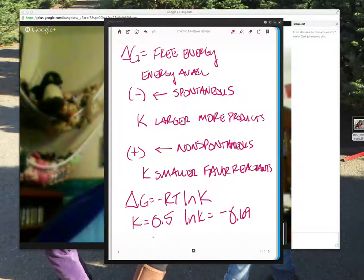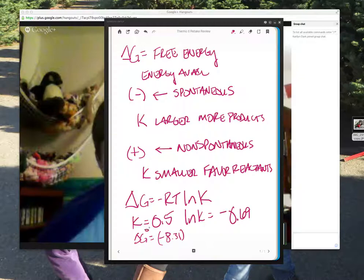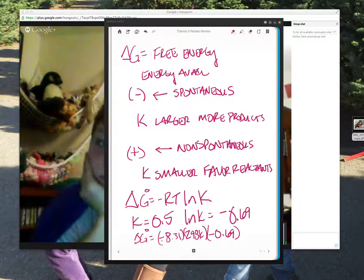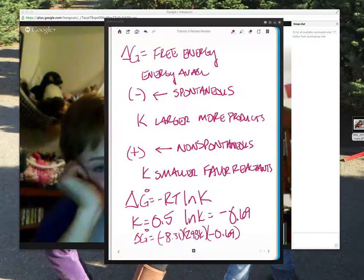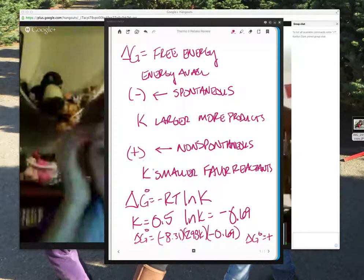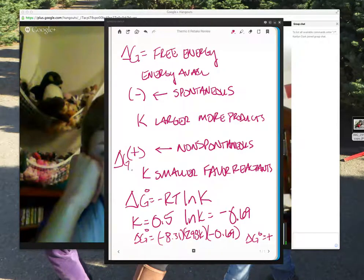So if K was equal to 0.5, then natural log of K ends up being equal to negative 0.69. Okay. So that means that delta G would be equal to negative 8.31 times 298 Kelvin times negative 0.69. And a negative times a negative gives you a positive. So that means that delta G naught is positive.